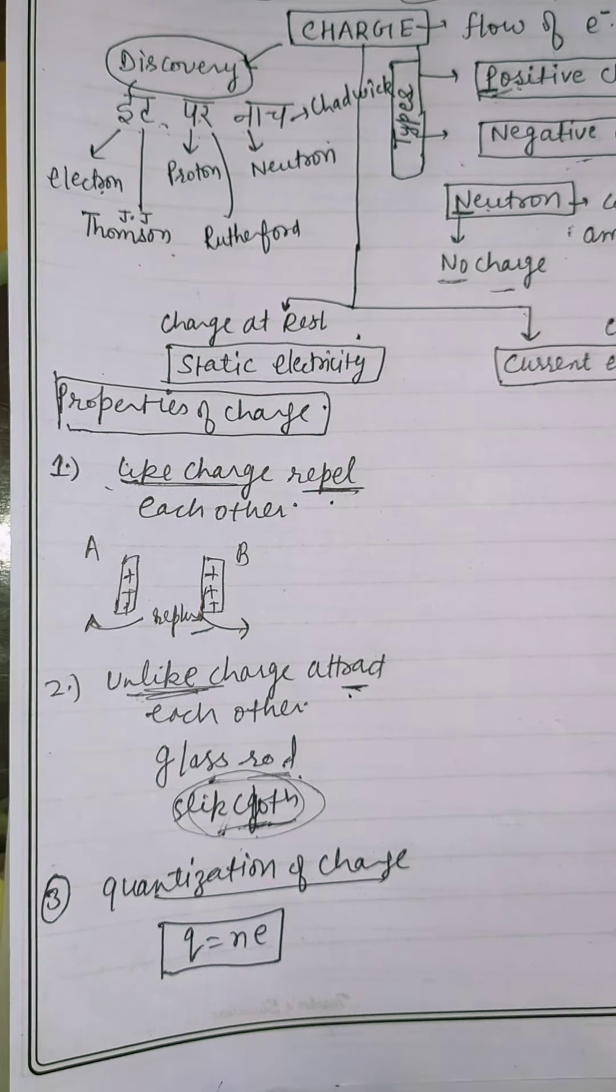Next, is quantization of charge. Here, Q is quantization of charge. N is an integer number. And E is electron basic charge. Quantization of charge means charge is always present in integral form.